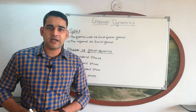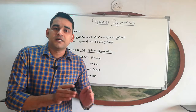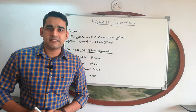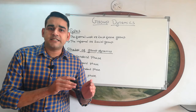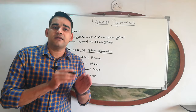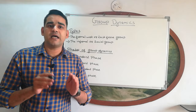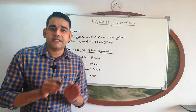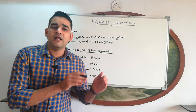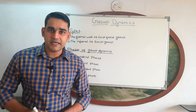Let's see the definition of group dynamics. Group dynamics is defined as a social process in which people interact face to face in small groups. It is a part of society in which people interact face to face in small groups.